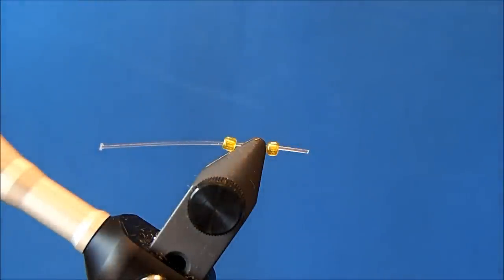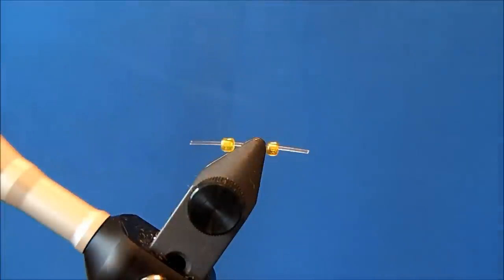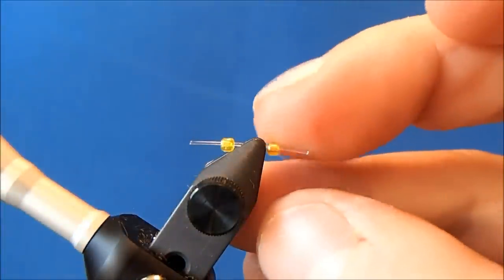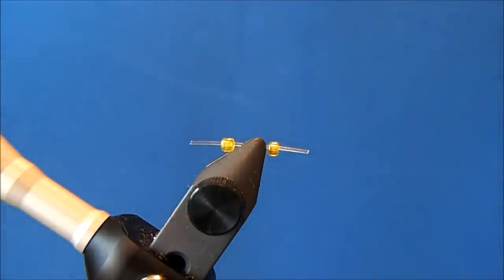What will happen here is as I melt the line, it'll adhere to the glass beads and it'll create a little bump just like it did with the other eyes, but it'll help keep that in place.